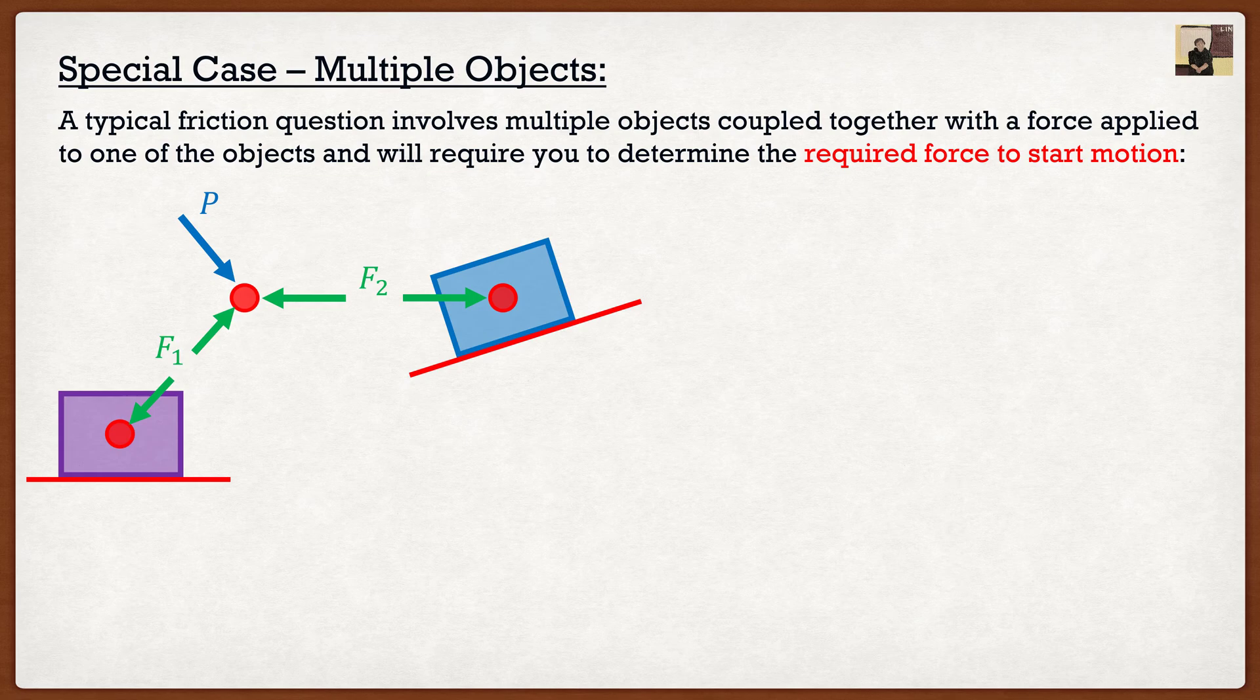If we were to look at the purple box, we know that F1 is going to try and cause horizontal movement to the left. So our frictional force is going to go to the right. If we were to look at our blue box, our force is trying to push it to the right. So our frictional force is going to the left.